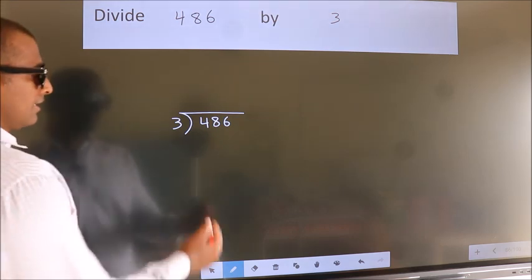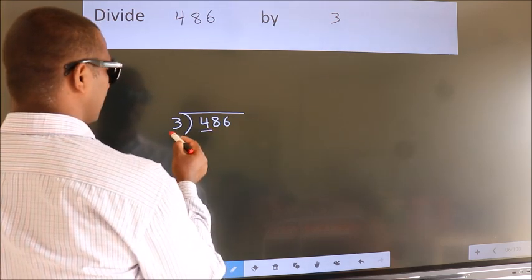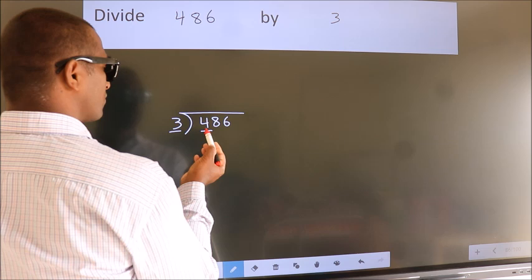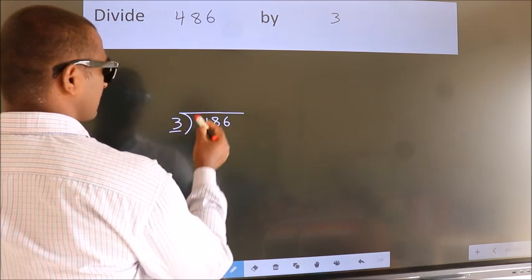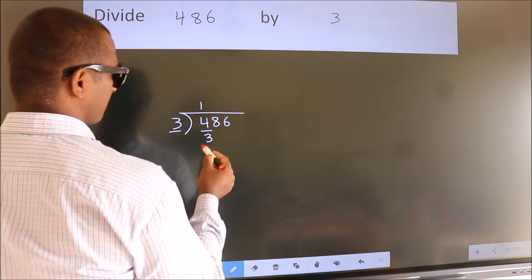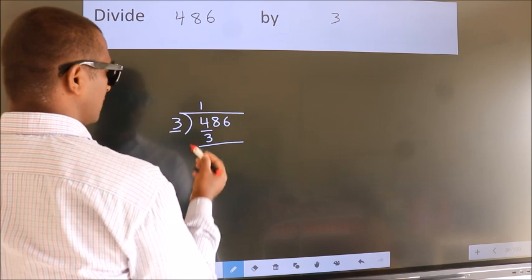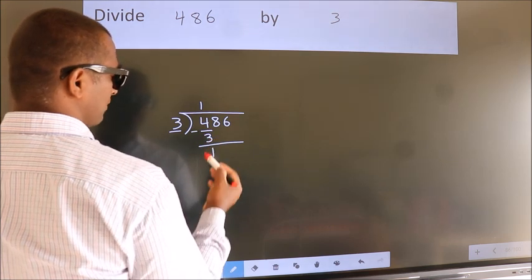Next. Here we have 4, here 3. A number close to 4 in 3 table is 3 once 3. Now we should subtract. We get 1.